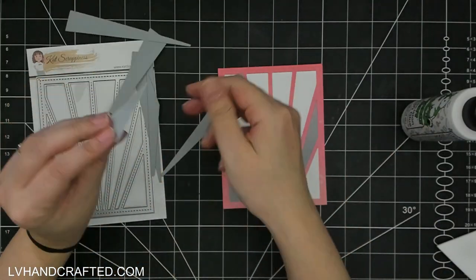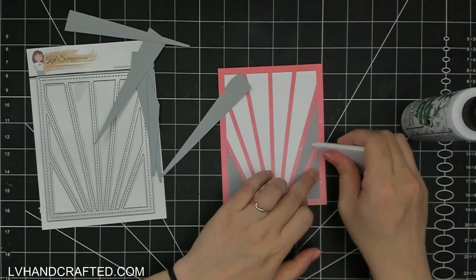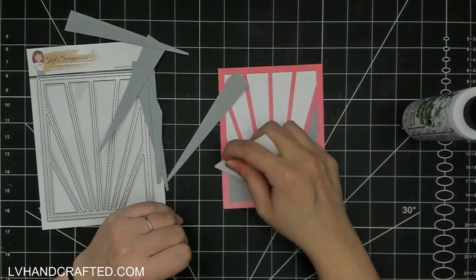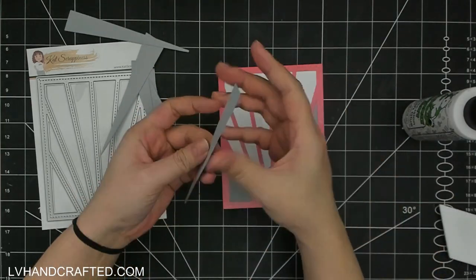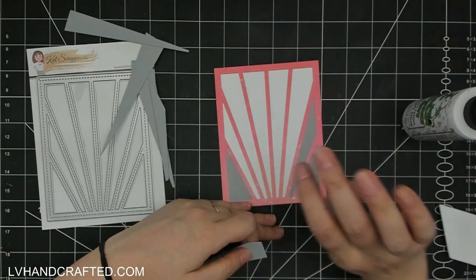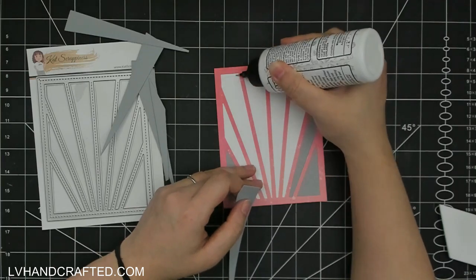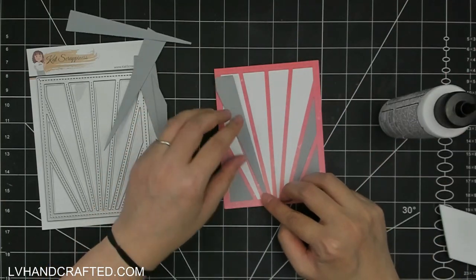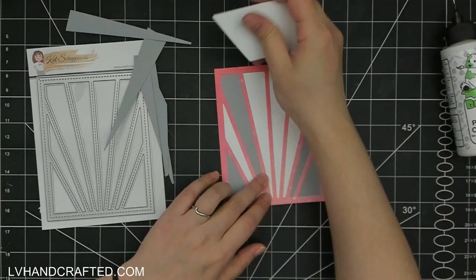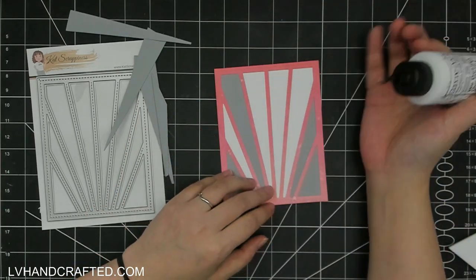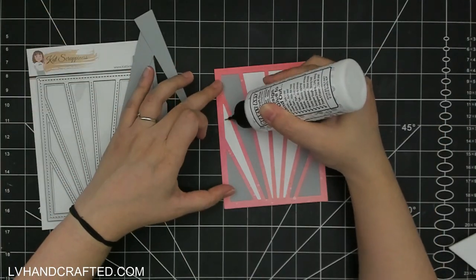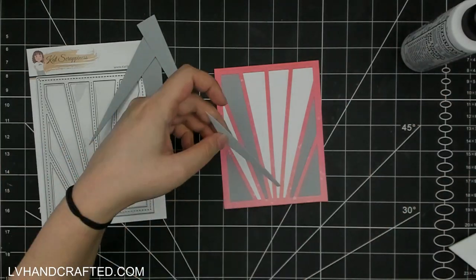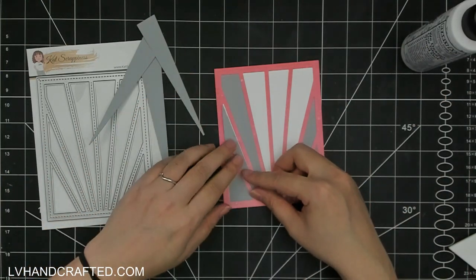I'm laying the die cut pieces back in but I'm mixing and matching between the two. So the first card I made had a gray border with the Sunrays and the sort of triangular pieces in between the Sunrays were my pink inky panel and this is going to be the reverse of that. So that's one of the things that I really love about dies like these because there's really no waste.